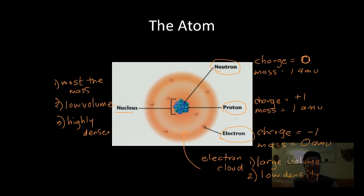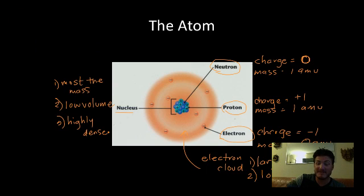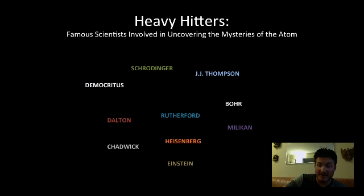Moving on to how we've discovered these properties. It took the hard work of a number of scientists. We've got Democritus, Schrodinger, J.J. Thompson, Dalton, Rutherford, Bohr, Chadwick, Heisenberg, Millikan, and Einstein. I'm not going to make you memorize all this information about all these different characters, but we are going to concentrate on four of them.